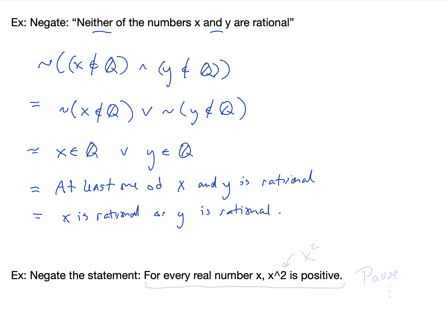Now I'd like you to try negating a statement of a form we haven't seen before in terms of negations. Try negating: 'for every real number x, x squared is positive.' Think about what the absolute negation of that statement is, then we'll discuss.